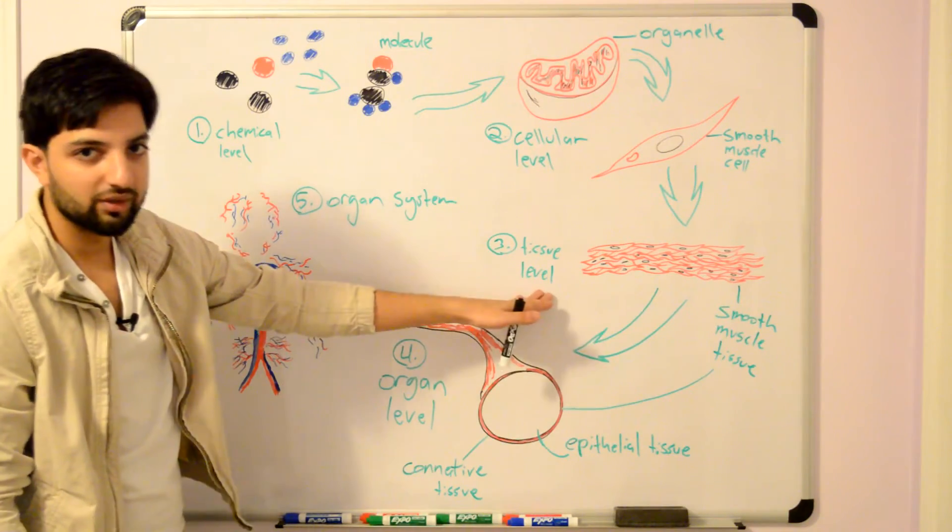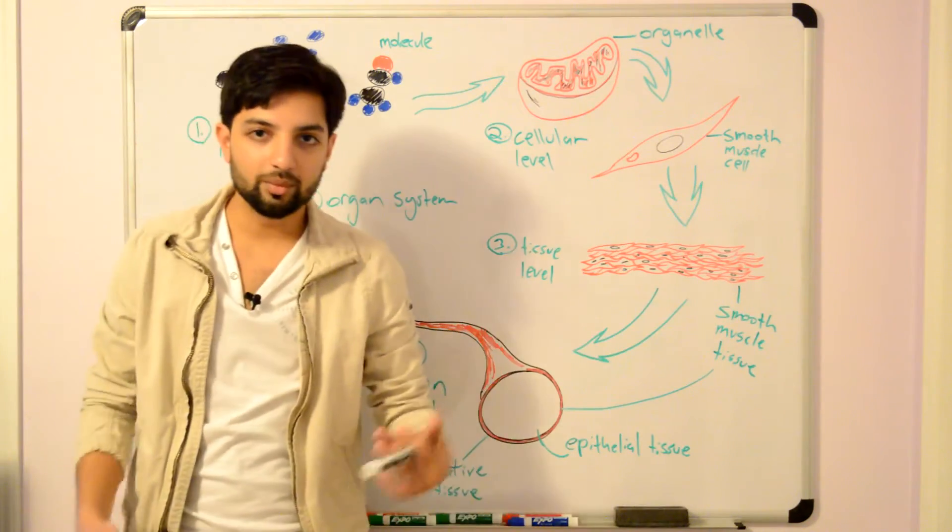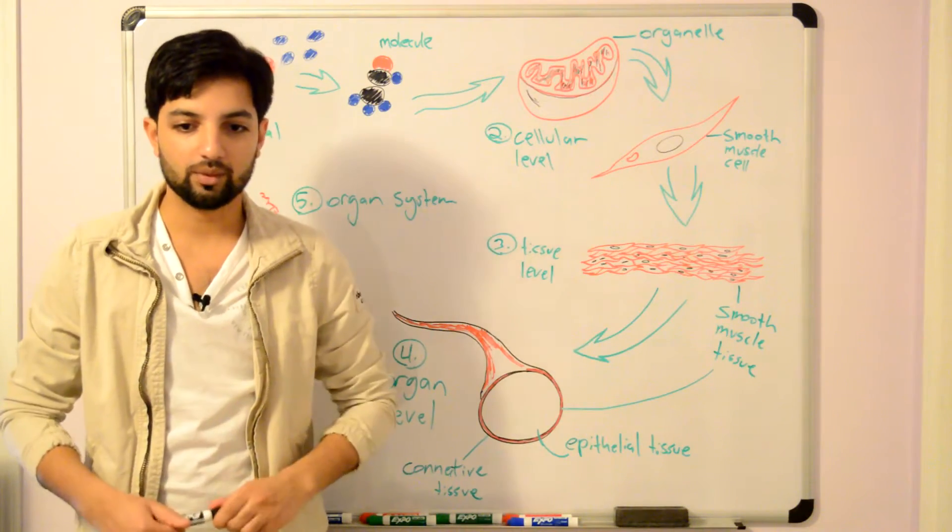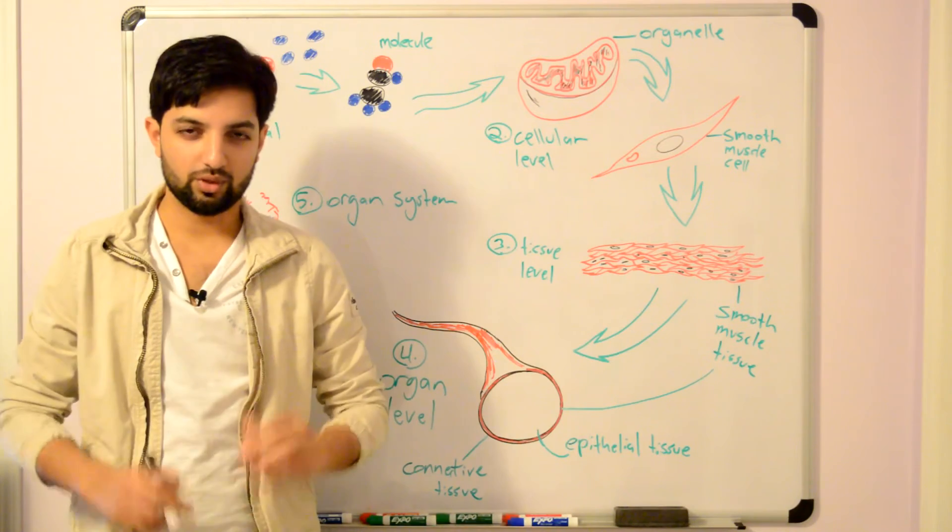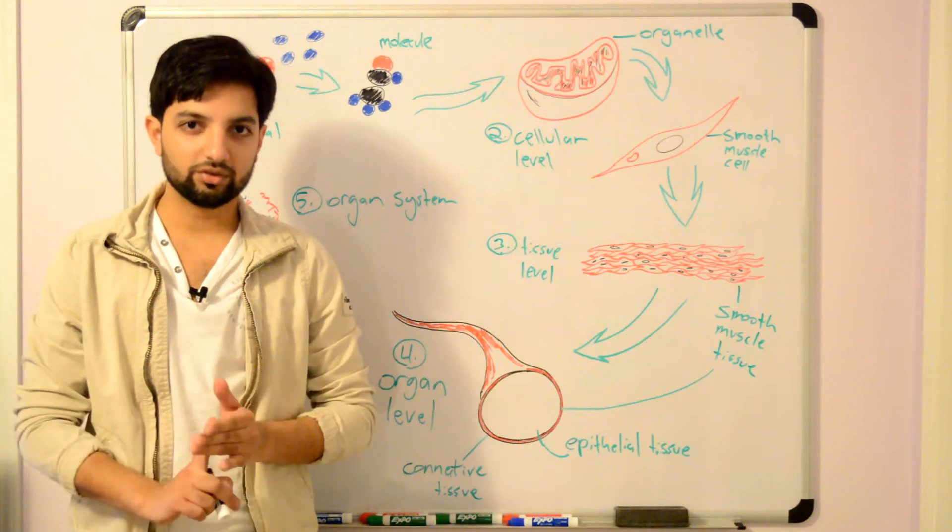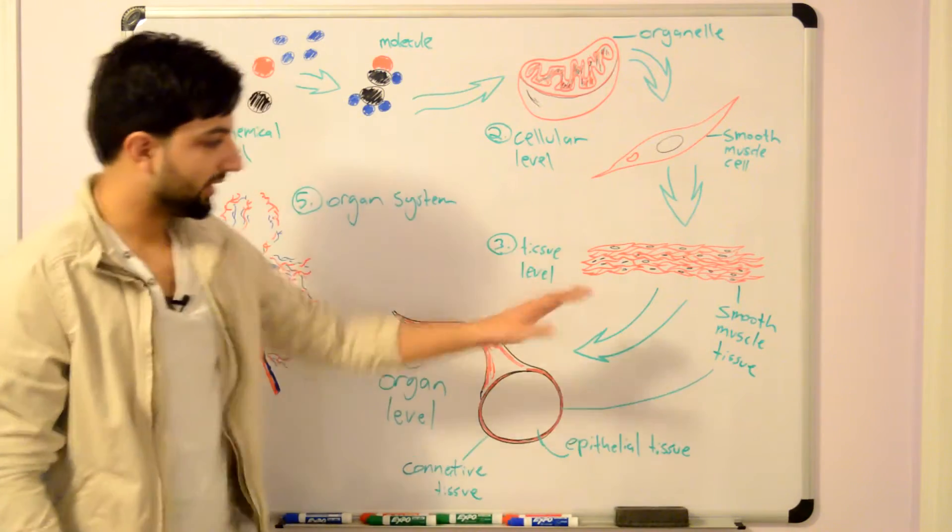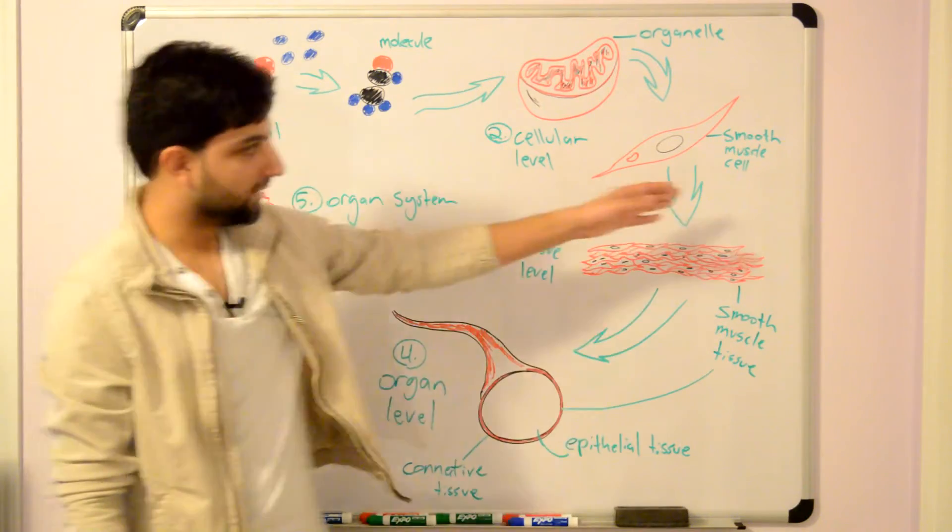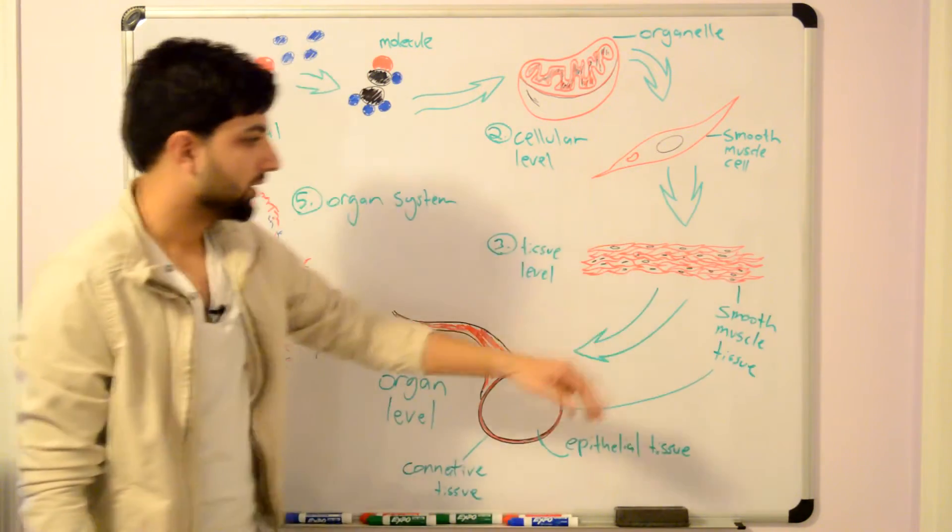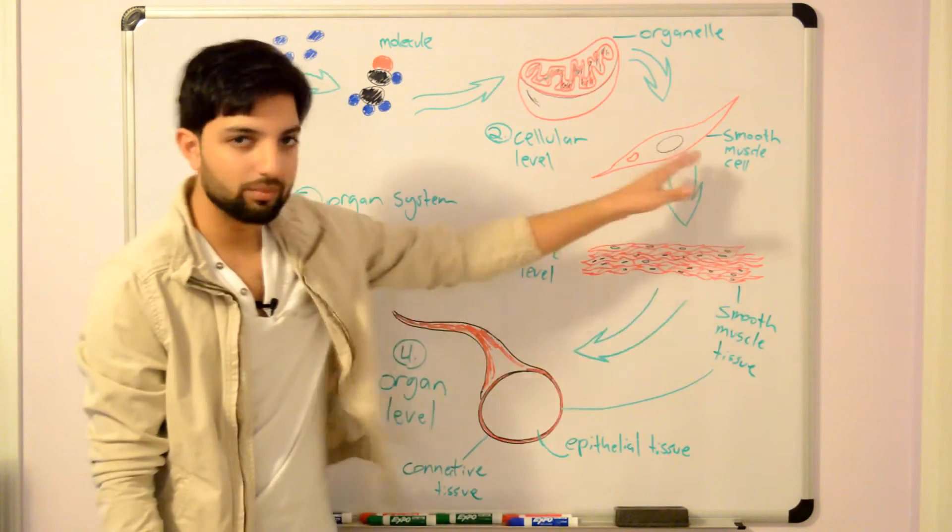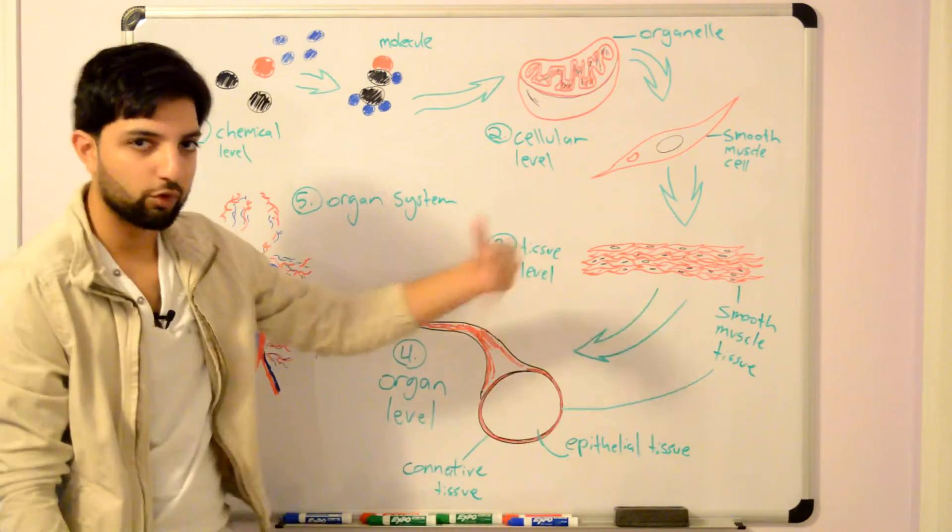Tissues are similar cells working together to perform a common function. There are four different types of tissues: epithelium, connective, muscle, and nervous tissue. In this case, you have a smooth muscle cell. Now this is smooth muscle tissue—a bunch of individual muscle cells coming together and performing a similar function.